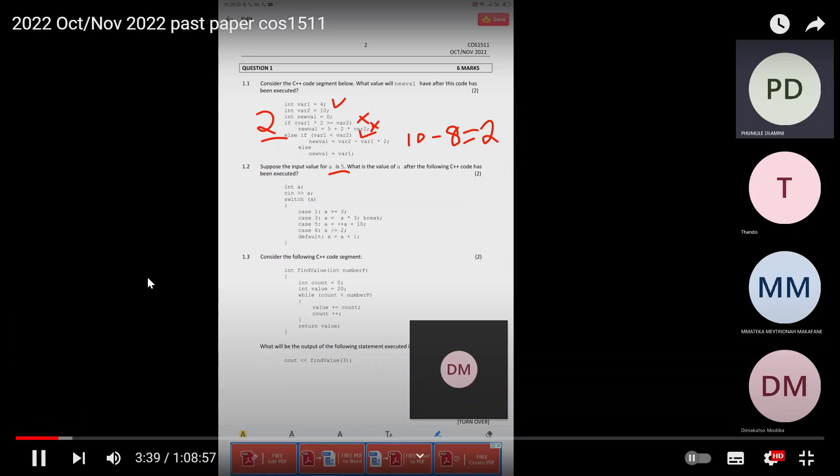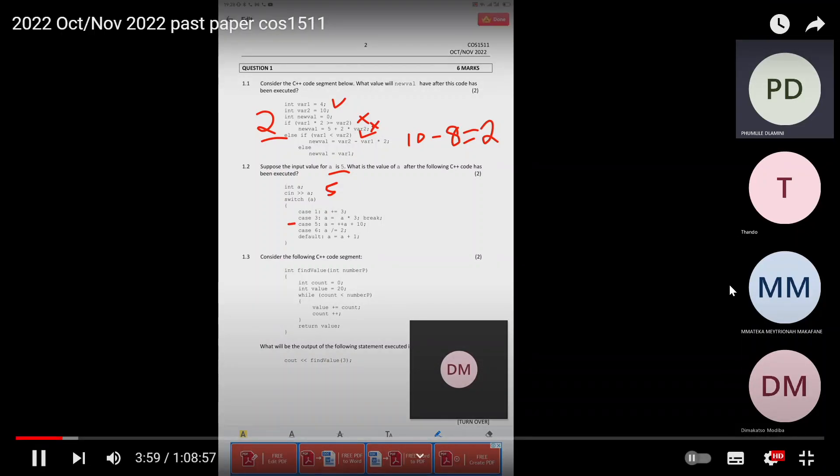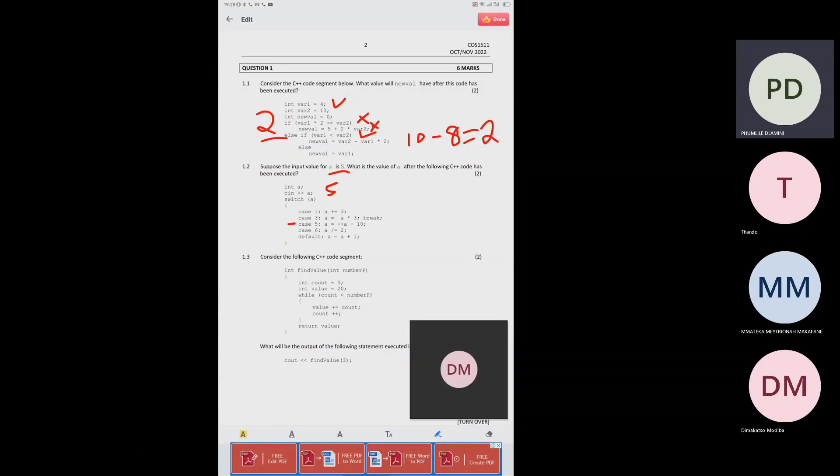This is the code in C when the user is going to enter five as indicated in switch A. When the user enters five, you can see how we are working with the cases - case one, case two, through case five. It's going to come straight here to case five. When it comes to case five it finds this statement: A equals plus plus A plus ten. So plus plus A increments this five at the same time, it's going to be six plus ten which is going to give you 16.